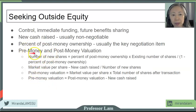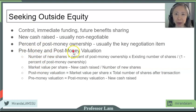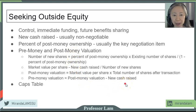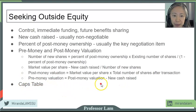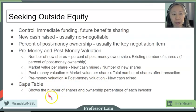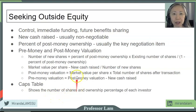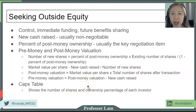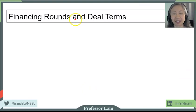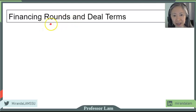Going along with the pre-money valuation, another important item to keep track of for a private firm is something called the cap table. The cap table is short for capitalization table. In this table, you keep track of the number of shares and also percentage ownership for each investor, including the existing entrepreneur as well as the new outside investor.